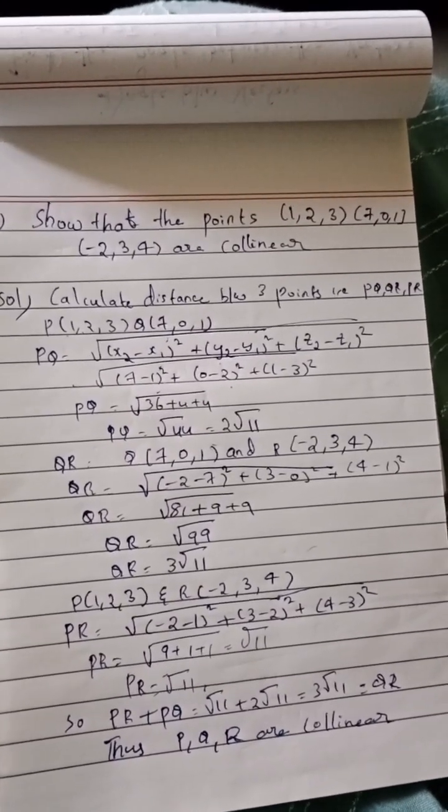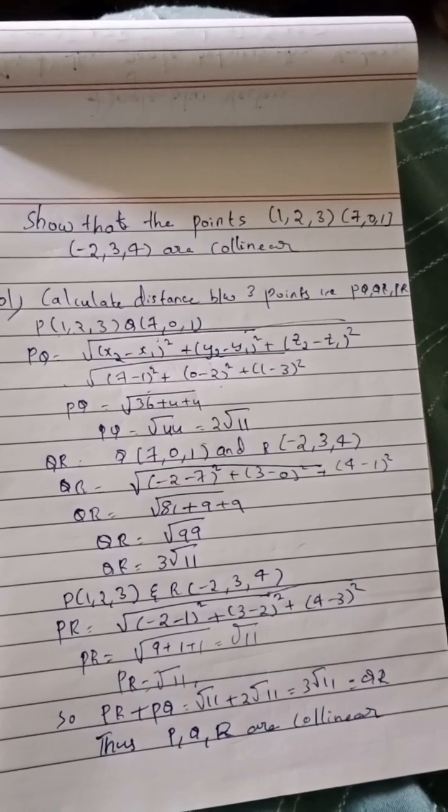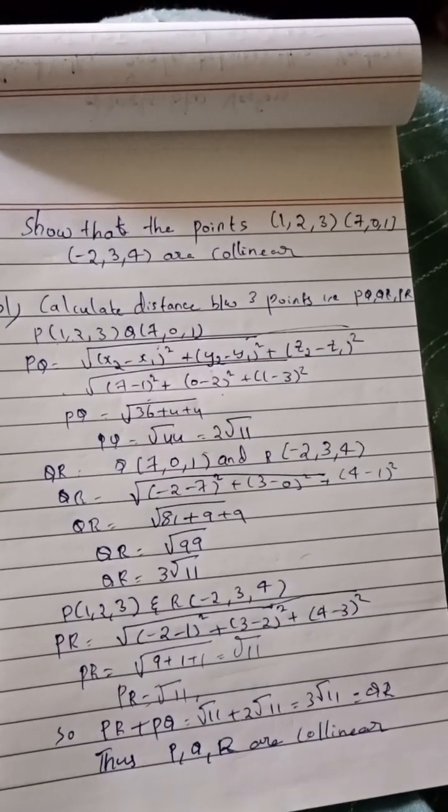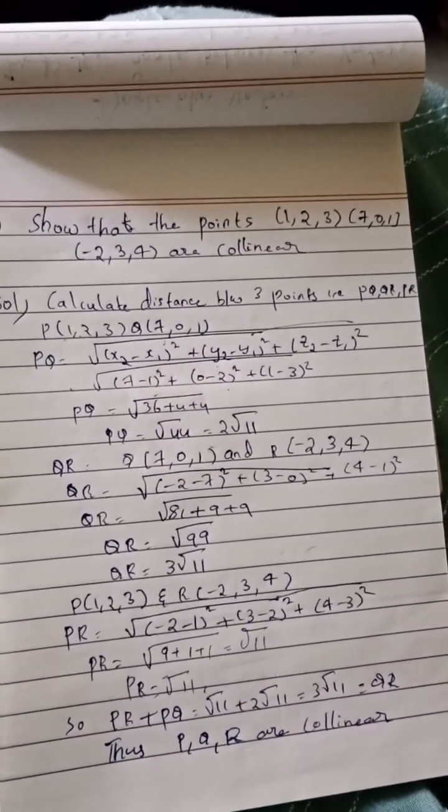The P and Q values are given, so x2 will be 7 and x1 will be 1. (7 minus 1) whole square plus (0 minus 2) whole square plus (1 minus 3) whole square. Then PQ will be 2 root 11.